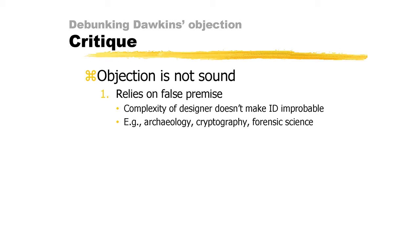In fact, in these sciences, the designer is even more complex than the objects or phenomena explained, yet the designer hypothesis is legitimate. Notice that if we were to accept Dawkins' 'Who Designed the Designer' objection as a block to inferring a designer, then, to be logically consistent, the aforementioned explanations would not be legitimate. But they are legitimate. In archaeology, the designer is more complex than the cave painting, more complex than the arrowhead. In cryptography, the designer is more complex than the code. In forensic science, the designer is more complex than the murder weapon or the event itself. Thus, it's false that the complexity of a designer makes a designer hypothesis improbable.